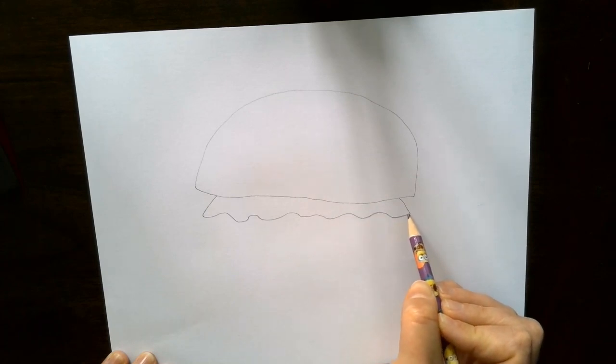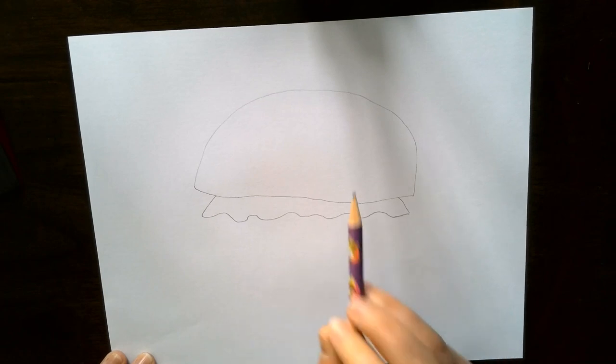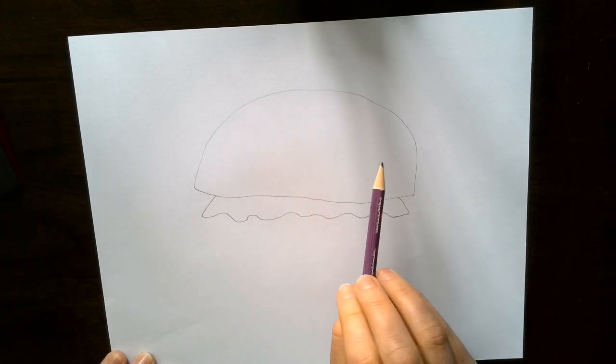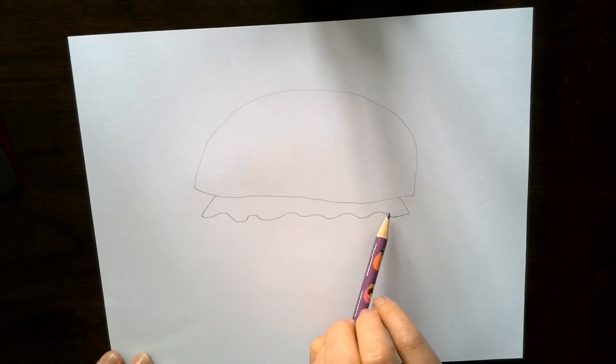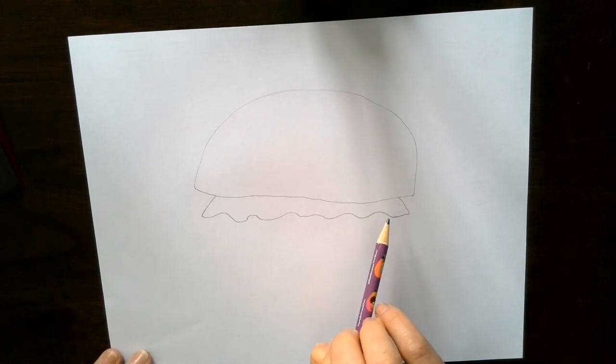I've been reading about jellyfish today because I didn't know much about them. This top part here is called the bell, and then this part that you see underneath some of them is just a muscle that they use to help them swim.